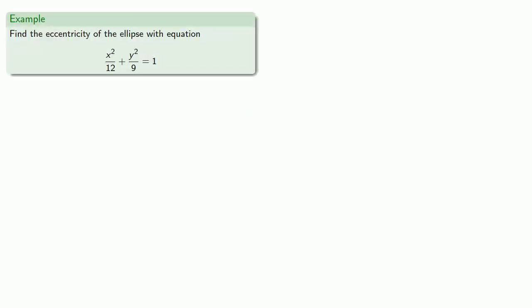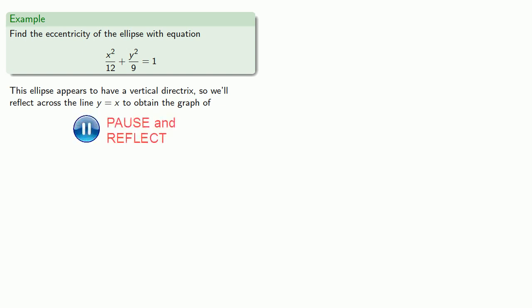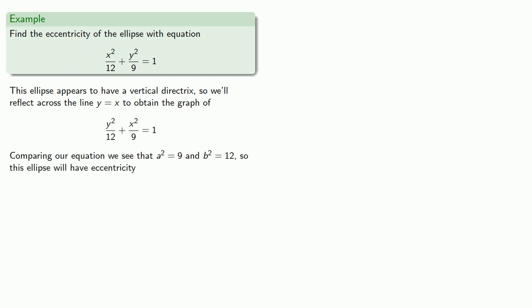So back to this ellipse. This ellipse appears to have a vertical directrix. So we'll reflect across the line y equals x to obtain the graph of the reflected ellipse. And comparing, we see that a² is equal to 9, b² equals 12, and so our ellipse will have eccentricity calculated from these values.